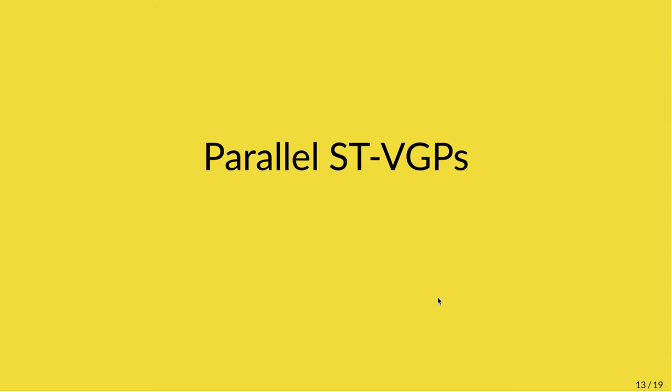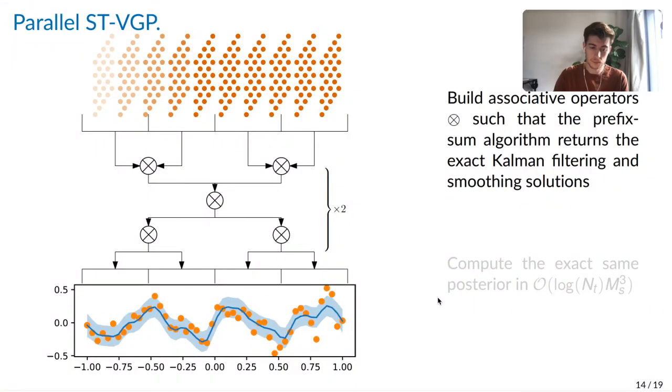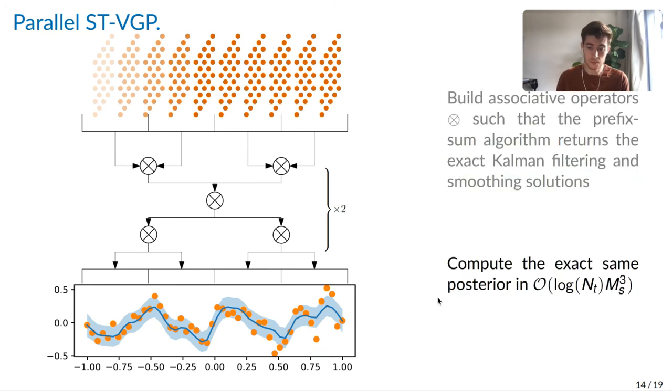So to take this computational saving even further, we utilize recent work by Sarka 2021, and show that the exact same ELBO can actually be computed in parallel. We do this by defining appropriate associative operators, such that we can run a prefix-sum algorithm to compute the Kalman filter and smoothing solutions. So this computes the exact same posterior, the same q of u, and with sufficient processors, is actually sublinear with respect to the number of time points.